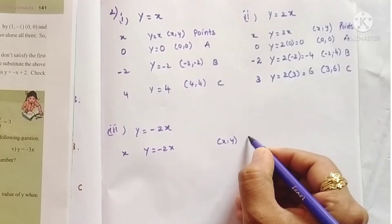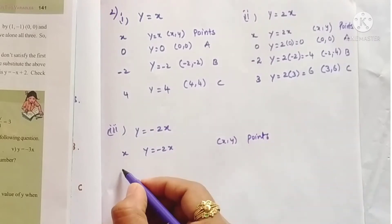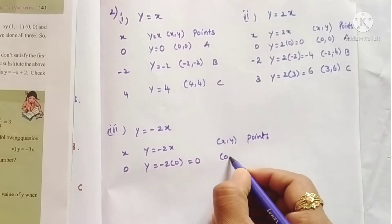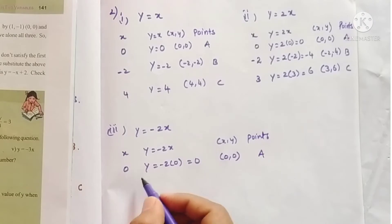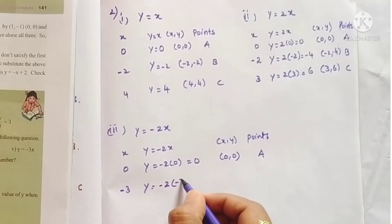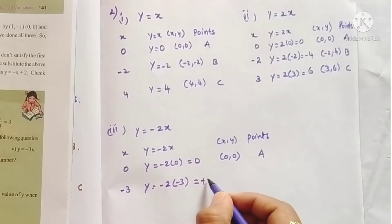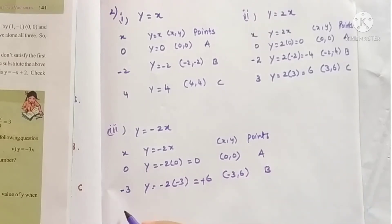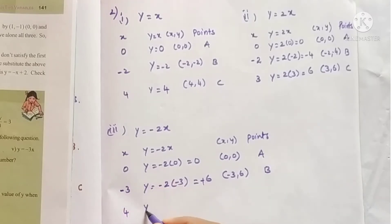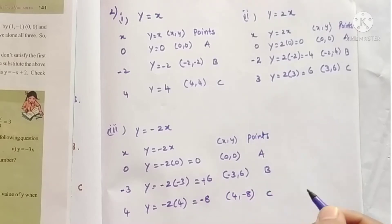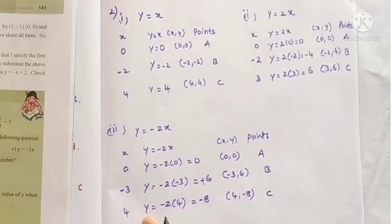For the third equation, y = -2x: if x = 0, y = -2×0 = 0, giving point A (0, 0). If x = -3, y = -2×(-3) = 6, giving point B (-3, 6). If x = 4, y = -2×4 = -8, giving point C (4, -8).